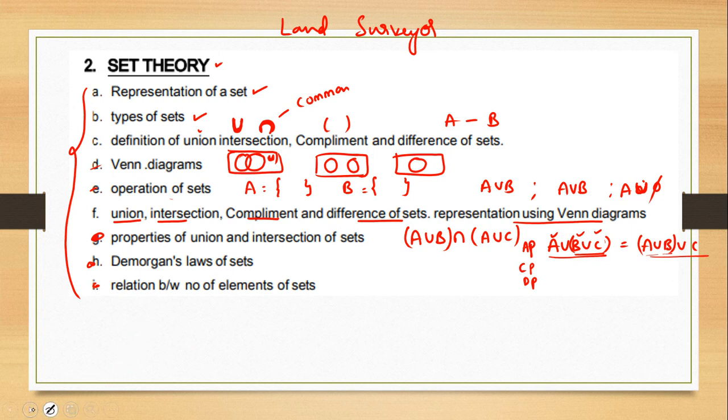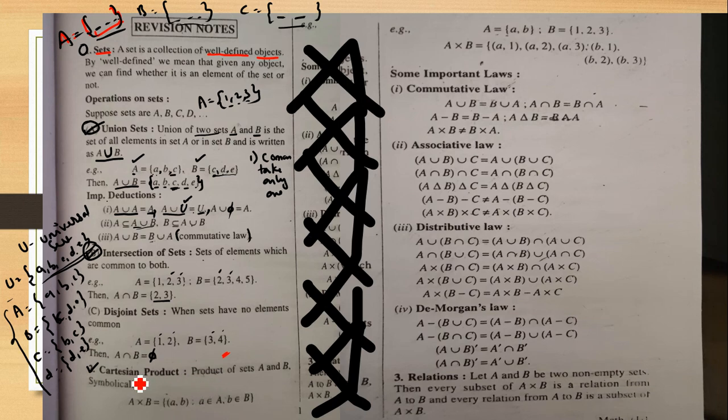Continuing from where we stopped in the last session — this is a continuation. We covered disjoint sets, which were explained previously. Now we move on to Cartesian sets — the Cartesian product.